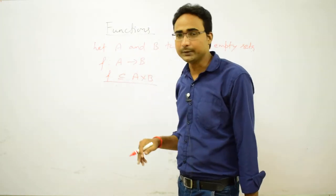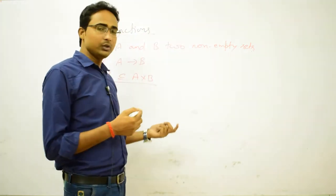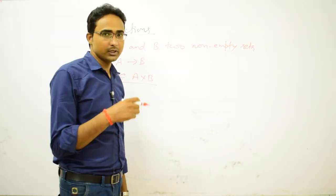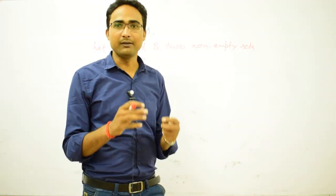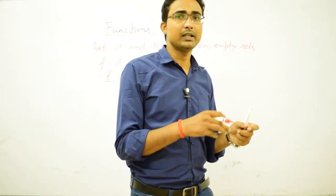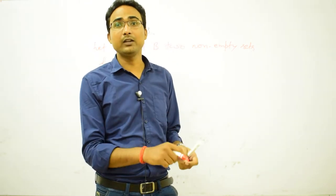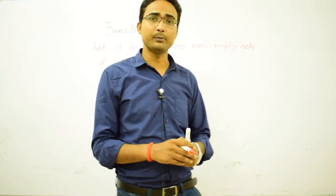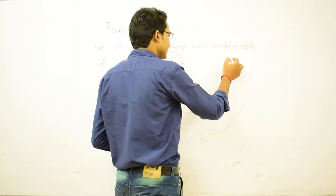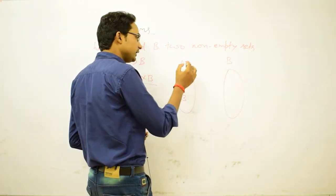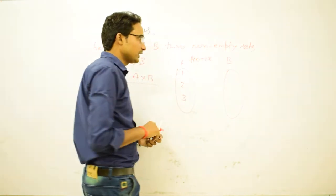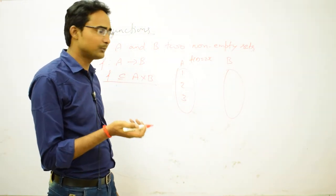Function from set A to set B is a rule by which every element of set A has a unique image in set B, or every element of set A links with a unique element in set B. For example, considering set A = {1, 2, 3} and the rule f(x) = 2x.